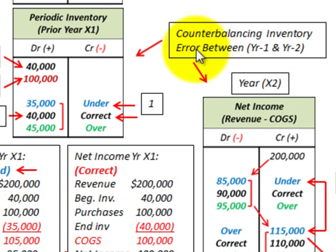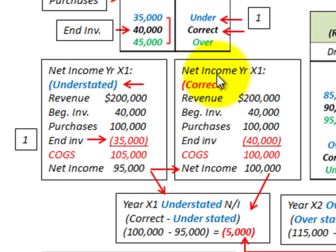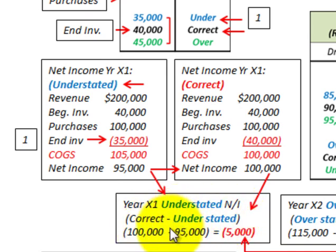Now let's look at the counterbalancing effect of inventory errors between year one and year two in terms of net income. Where we have undervalued ending inventory of $35,000 in year one, the calculation gives net income of $95,000 — understated. The correct ending inventory of $40,000 gives correct net income of $100,000. The difference is $5,000 understated net income on the income statement in year one.